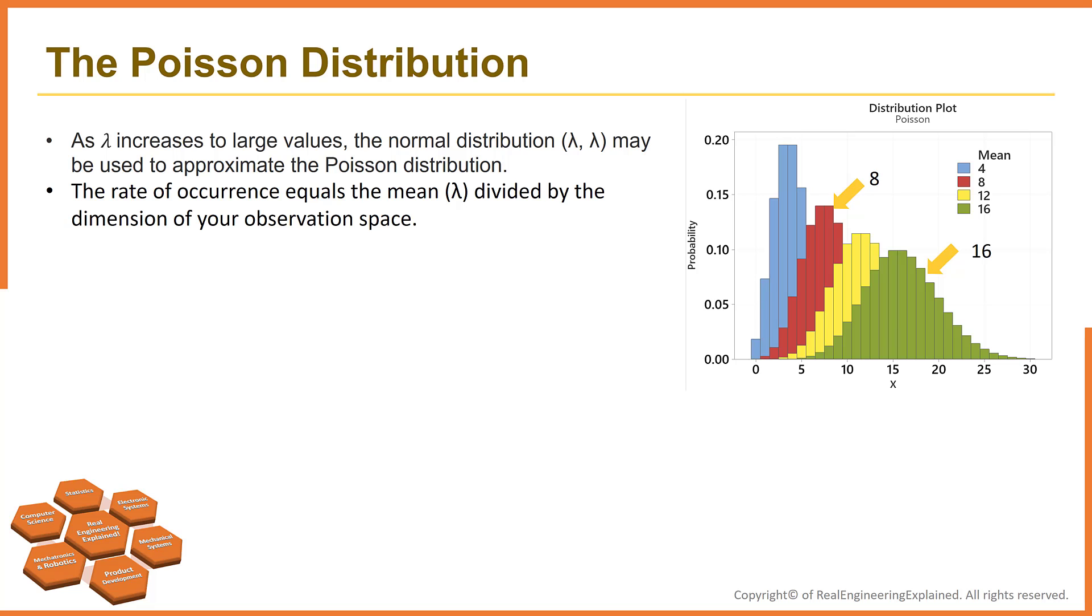The question here is how to calculate the rate of occurrence for Poisson distribution. For example, switchboard A receives 80 telephone calls in 5 hours. And switchboard B receives 80 calls in 10 hours. You cannot directly compare these values because their observation spaces are different.